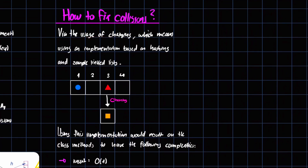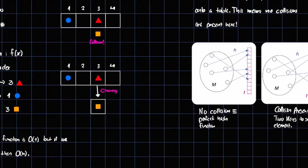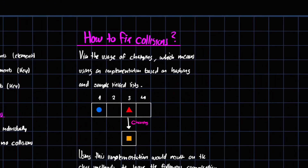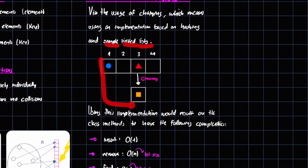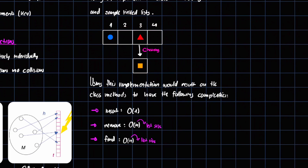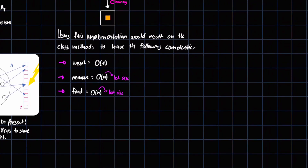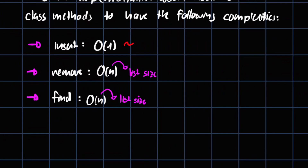Collisions can be fixed via chaining — using a linked list implementation based on hashing. Using this implementation, the class methods have the following complexities: insert is O(1), remove is O(n), and find is O(n). On average, all three are O(1), but in the worst case scenario they are O(n).